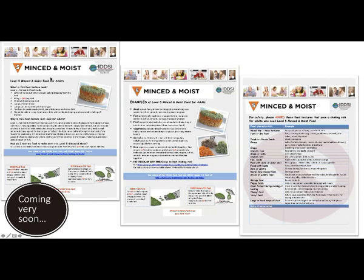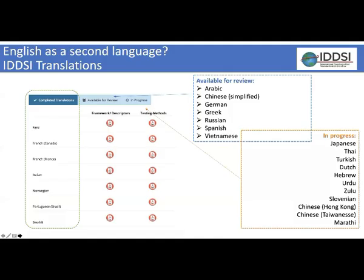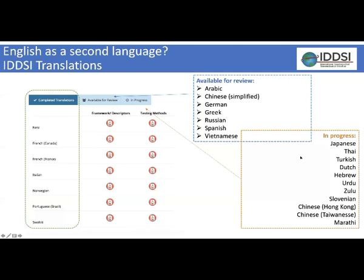Coming very soon are patient handouts for all IDDSI diet levels. These include testing methods, links to the website, food textures to avoid as a choking risk, and spaces for extra clinician notes. These have been road tested in New Zealand and put through a consumer review for readability.